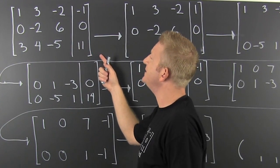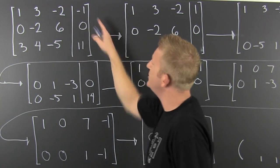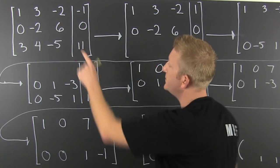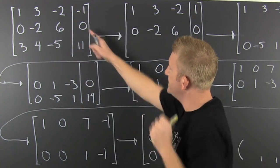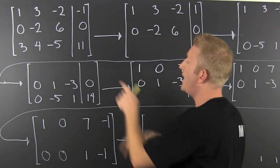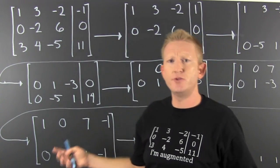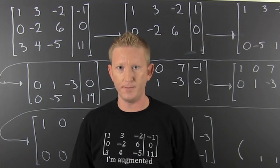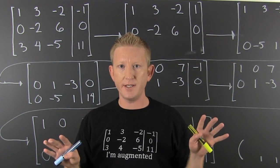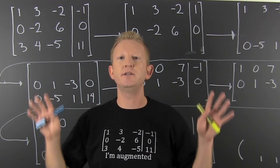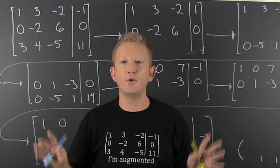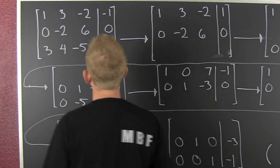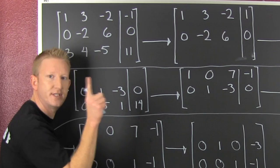I have this matrix E: 1, 3, minus 2, minus 1, none, minus 2, 6, none, 3, 4, minus 5, and 11. What am I going to try to do? I'm going to try to get it down to reduced row 1, column 1 form. Notation, people — notation, notation, notation.